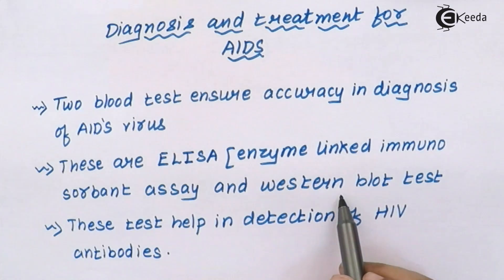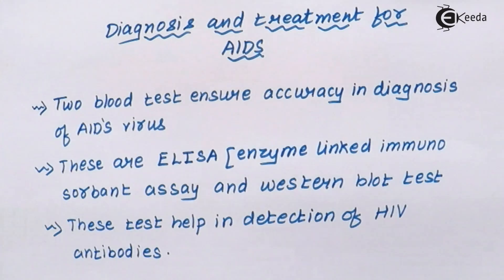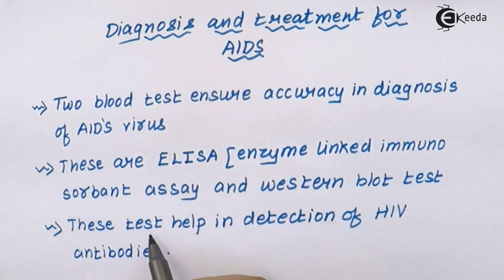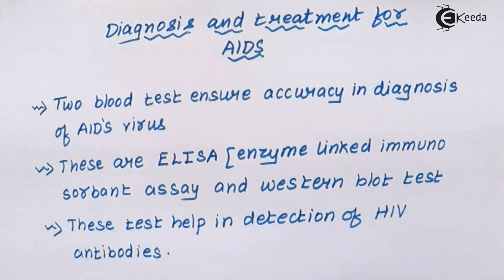The Western Blot assay is basically a confirmatory test for HIV. If a Western Blot of an individual comes out positive, we can confirm that the individual has acquired HIV virus, or that HIV antibodies are present inside that individual. Both the Western Blot test and the ELISA test are used after some window period of time. Both tests help in detection of HIV antibodies. If HIV virus has not gained entry inside your body, there are no chances that you as a healthy individual will produce HIV antibodies.